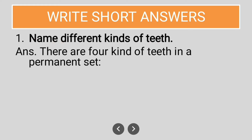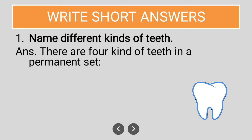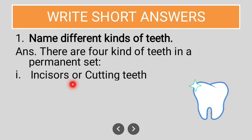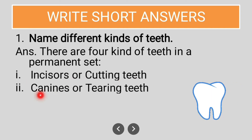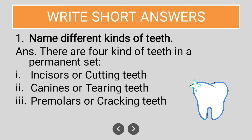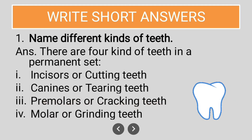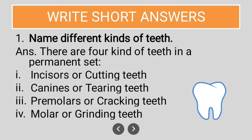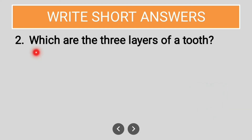Next, 'Write Short Answers: Name different kinds of teeth.' There are four kinds of teeth in the permanent set: incisors or cutting teeth, canines or tearing teeth, premolars or cracking teeth, and molars or grinding teeth.